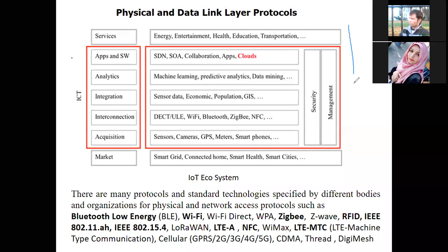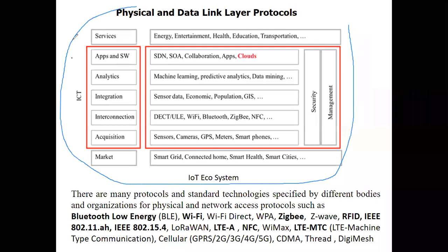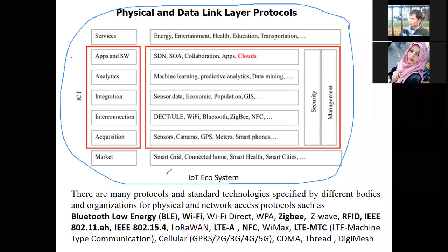This is an ecosystem of IoT. The bottom layer is the market, or you can say the applications of IoT where IoT can be applied. We can apply it in smart grid, smart home, smart health monitoring system, smart cities, and many more. This is the market where we will apply our IoT system.